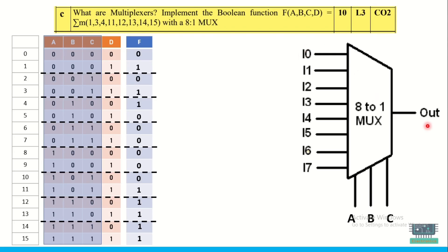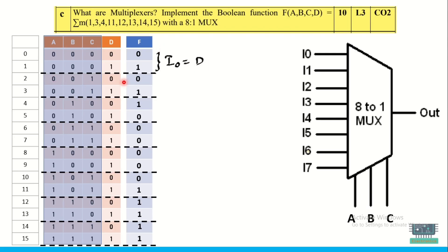For select line 0 0 0, i0 is selected. I map i0 with respect to d: when d is 0, f is 0; when d is 1, f is 1 — the output is the same as d, so i0 = d. For select line 0 0 1, when d is 0, output is 0; when d is 1, output is 1 — so i1 = d. For select line 0 1 0, i2 is selected: when d is 0, output is 1; when d is 1, output is 0 — so i2 = d̄.